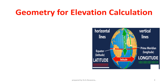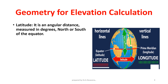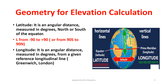Geometry for elevation calculation. Latitude is an angular distance measured in degrees north or south of the equator, denoted capital L, ranging from −90° to +90° (or 90° south to 90° north). Longitude is an angular distance measured in degrees from a given reference longitudinal line — the Greenwich meridian — denoted small l, ranging from 0° to 360° east, or equivalently from 180° west to 180° east.